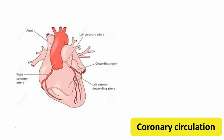There are two arteries arising from the ascending aorta. One is the right coronary artery and the other is the left coronary artery. So the two main arteries are the right and left coronary arteries. You can see here the right and left coronary arteries — they take origin from the aortic sinuses.